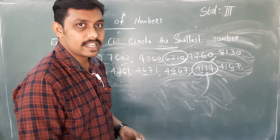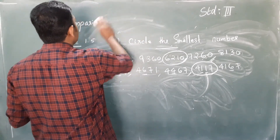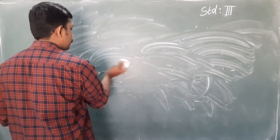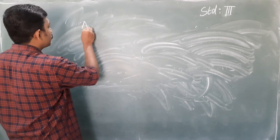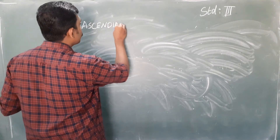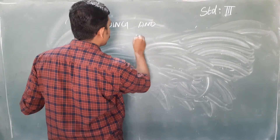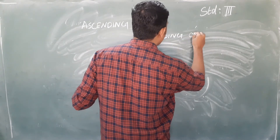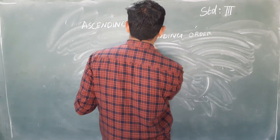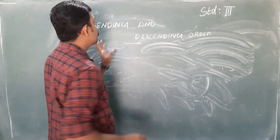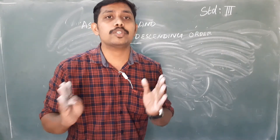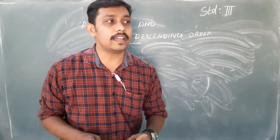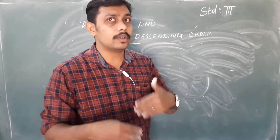Now we are moving to the next topic: ascending and descending order. Ascending and descending order is the arrangement of numbers. When two or more numbers are given, we have to arrange them in order.